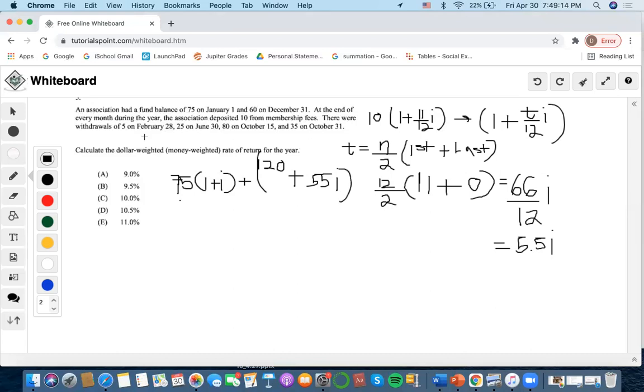Now let's go on to the next ones. There are withdrawals of 5 on February 28th. So February 28th, that means that two months have elapsed. So that would mean there are 10 months left. Then there would be withdrawals of 25 on June. That means that six months have elapsed. So that means there are six months left.